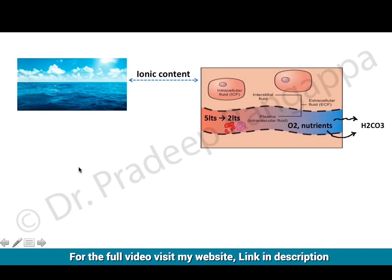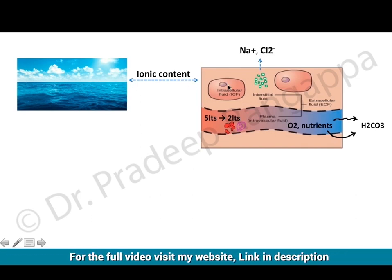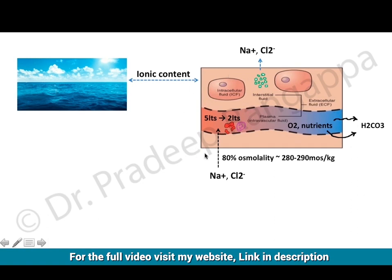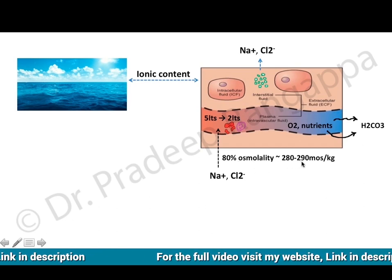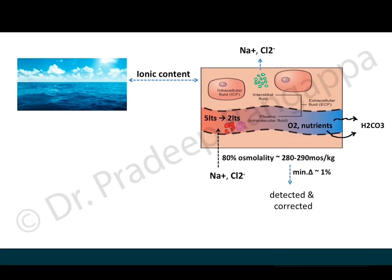Looking at the background: the ionic content of the ocean or sea is similar to that of blood. Sodium and chloride are predominantly present in the interstitial space, and they contribute to 80 percent of the osmolality, which is 280 to 290 milliosmoles per kg. So the whole osmolality of the blood is contributed predominantly by sodium and chloride.